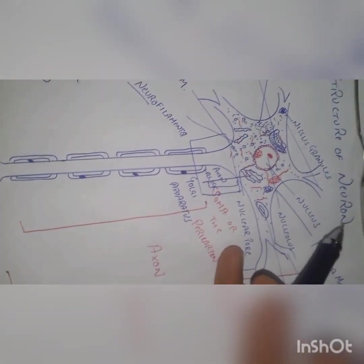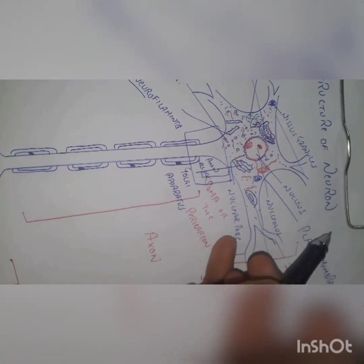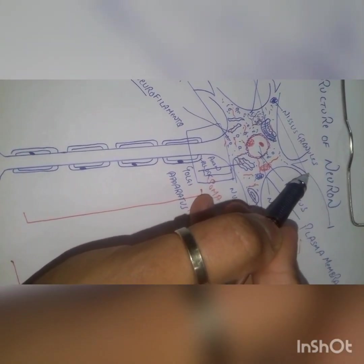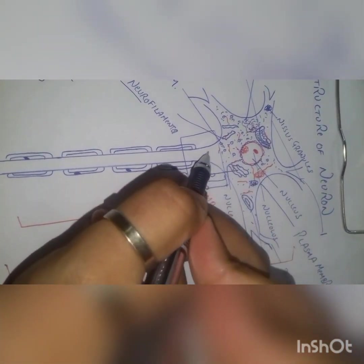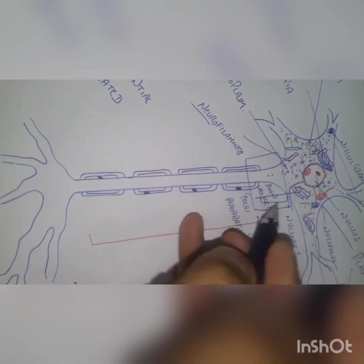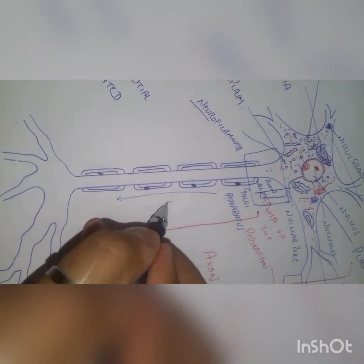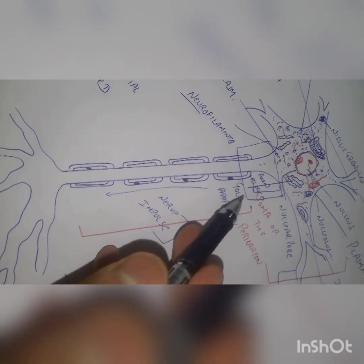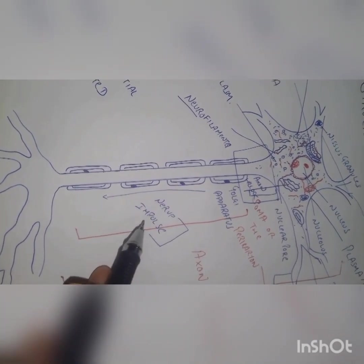Suppose a neuron acts as a receptor and someone has pinched you — the information from that part transfers to the dendrite, which receives it and transfers it to the cell body. As soon as the nerve impulse reaches the axon hillock, the action potential is generated here. The transfer of action potential along a nerve fiber is called a nerve impulse.